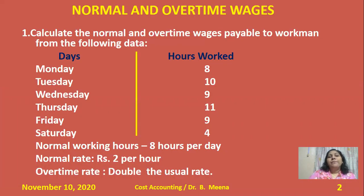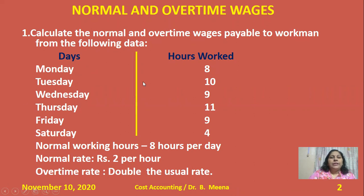Let me check one problem: calculate the normal and overtime wages payable to a workman from the following data. You have the information on the left-hand side column showing days from Monday to Saturday, and on the right-hand side, how many hours this worker worked each day — Monday 8 hours, Tuesday 10 hours, Wednesday 9 hours, Thursday 11 hours, Friday 9 hours, Saturday 4 hours.